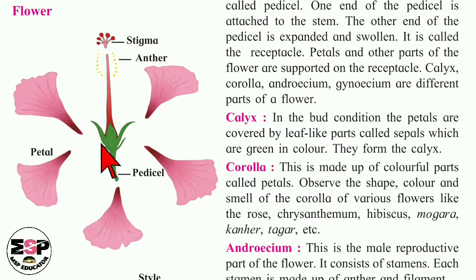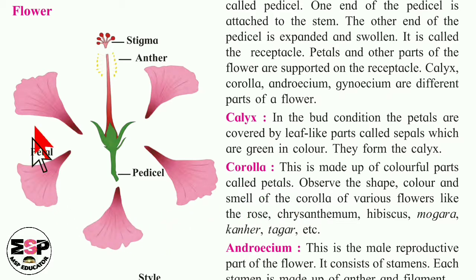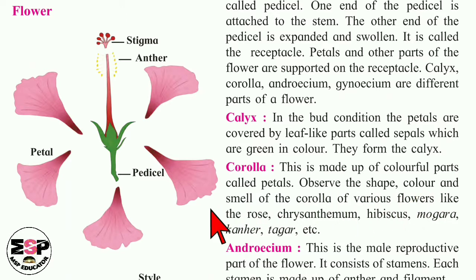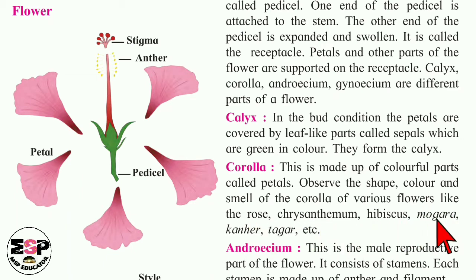The corolla is made up of colorful parts called petals — the colorful parts we see in a flower form the corolla. Observe the shape, color, and smell of the corolla of various flowers like rose, chrysanthemum, hibiscus, mogra, kanher, tagetes, etc. All these are flowering plants.